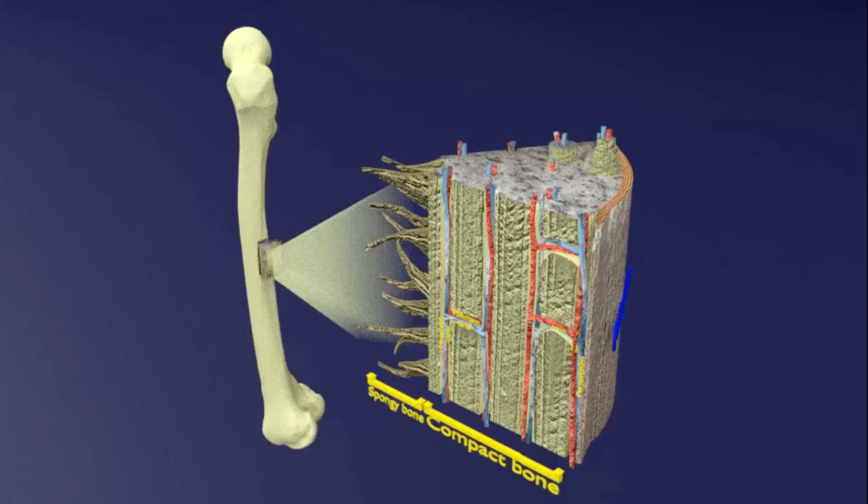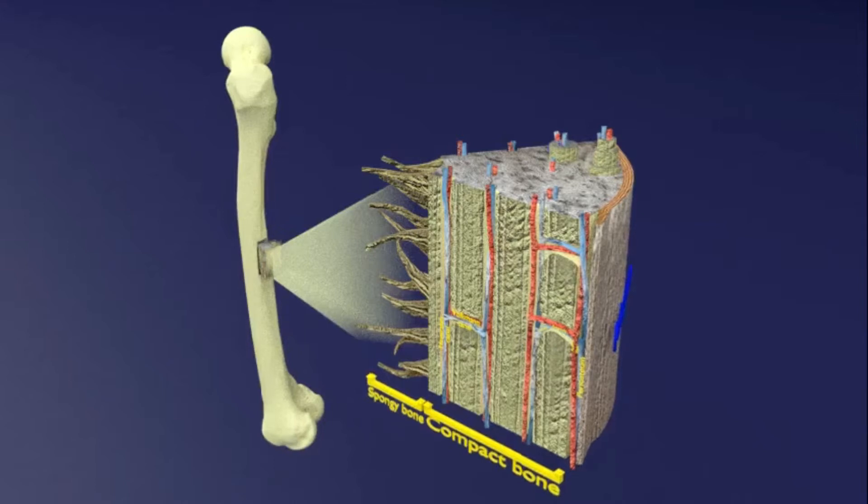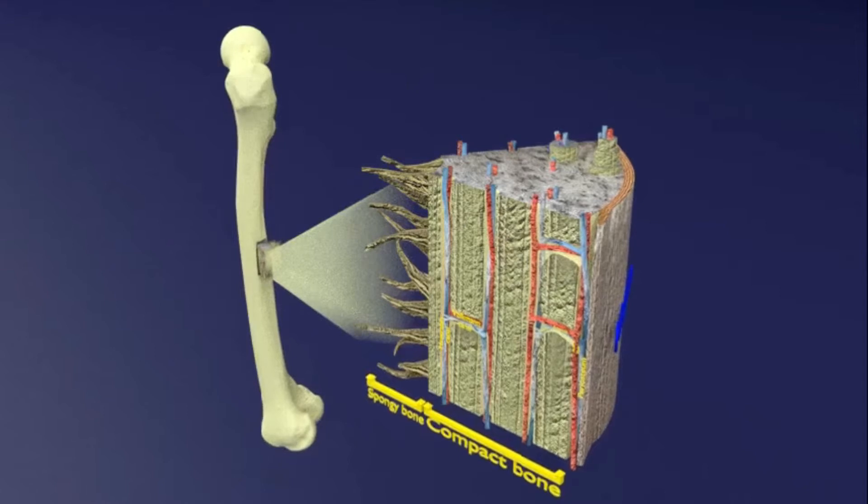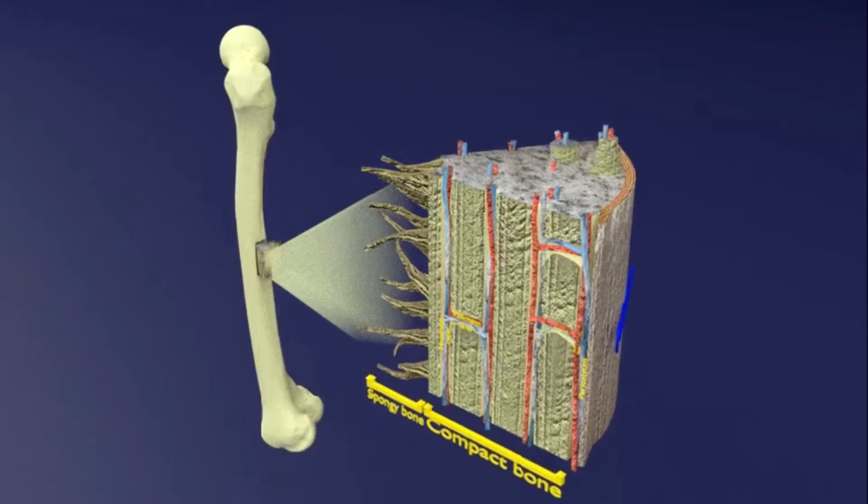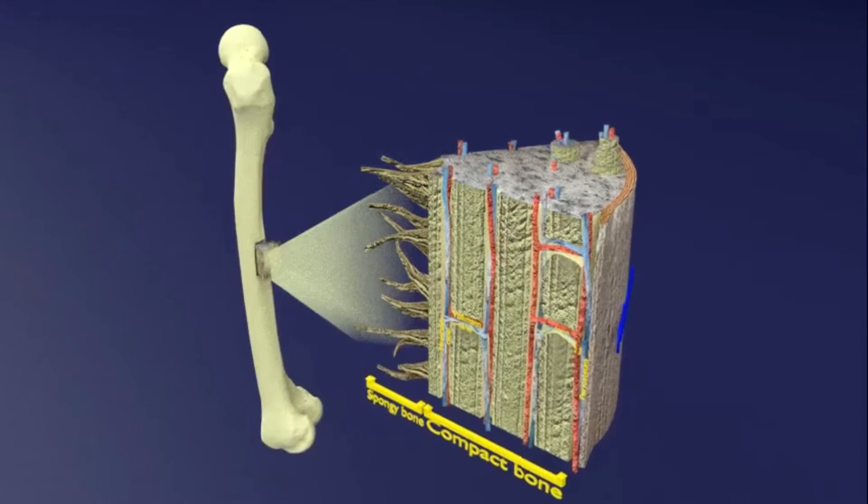Welcome back viewers. This animated video talks about the types of human bones and the microscopic structure of a long bone, particularly explaining the haversian system. Human bones are broadly classified into five categories.